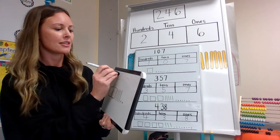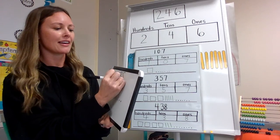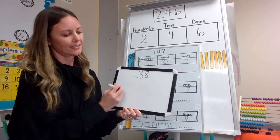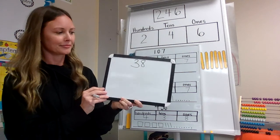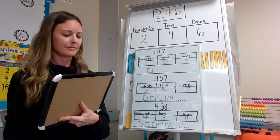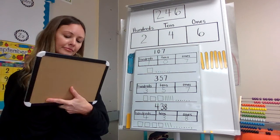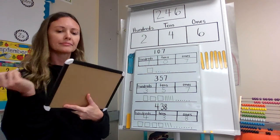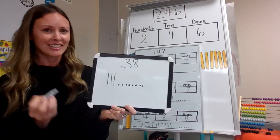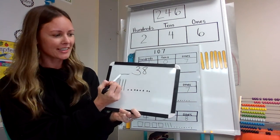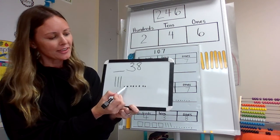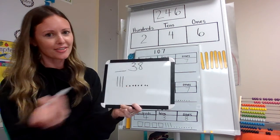Your next one I want you to do is the number 38. Give that a try. Ready for the answer? Do we have any hundreds for this one? Nope, there's nothing in the hundreds place. So you're going to start with your quick tens: 10, 20, 30, and then 31, 32, 33, 34, 35, 36, 37, 38.